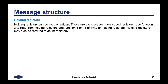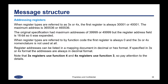Holding registers can be read or written — these are the most commonly used registers. You would use Function 3 to read from holding registers, and Function 6 or 16 to write to them. Holding registers may also be referred to as 4x registers. When register types are referred to as 3x or 4x, the first register is always 30001 or 40001, and the maximum address allowed is 365536 or 465536. The original specification had maximum addresses of 39999 or 49999, but the register address field is 16-bit, so it was expanded because there was no reason to limit it to 10,000 addresses.